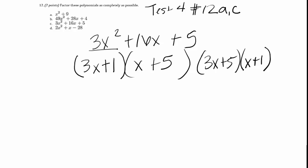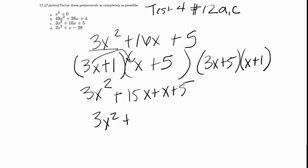So we try this by doing the distributive property, and we get 3x squared plus 15x plus x plus 5, over here. 3x squared plus 16x plus 5. Okay, so this one works, and these are our factors.